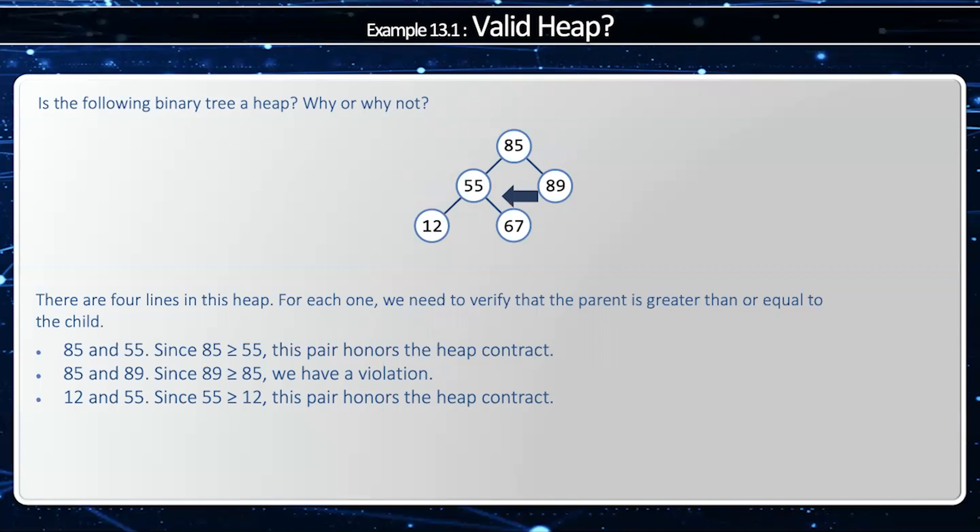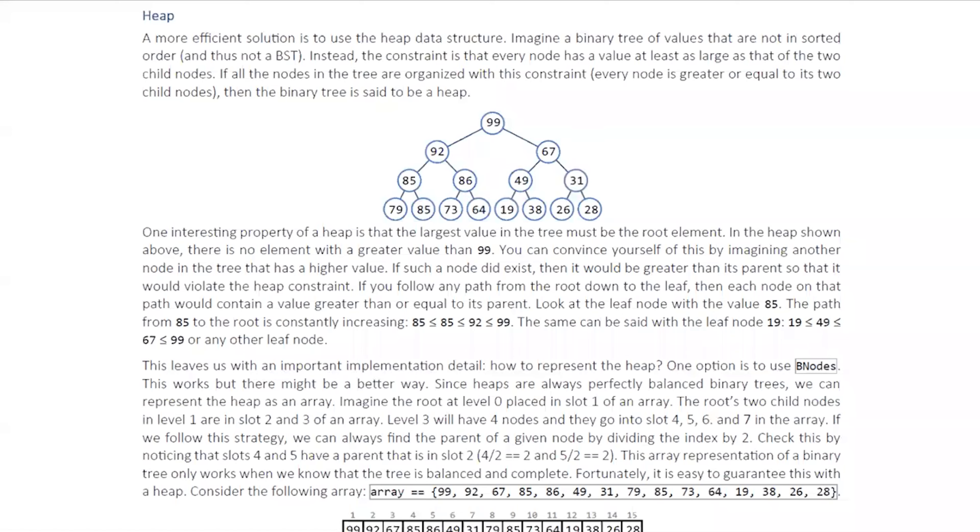Between 55 and 67, 67 is actually greater than 55, so the heap constraint is not honored. We have another violation. Since we have two violations, this is not a heap. To learn more about the heap, take a look at the C++ Data Structures textbook.